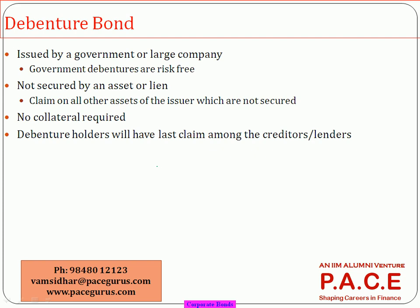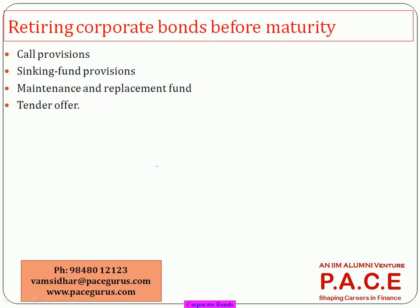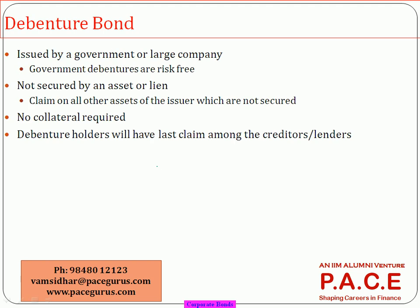A debenture is a bond where there is no collateral. An equipment trust certificate is similar to a mortgage bond but instead of a mortgage acting as collateral, the equipment acts as collateral. It is like leasing: the title of the equipment is kept by the bond issuer until all rentals are repaid, but the borrower can use it for business purposes.